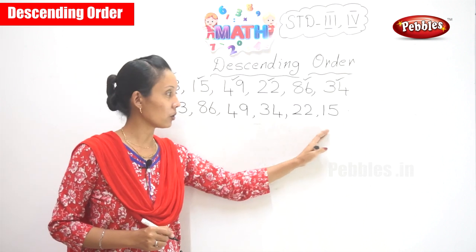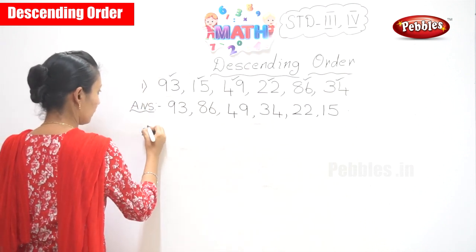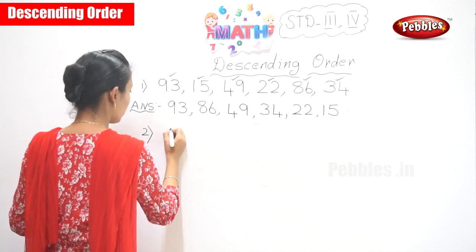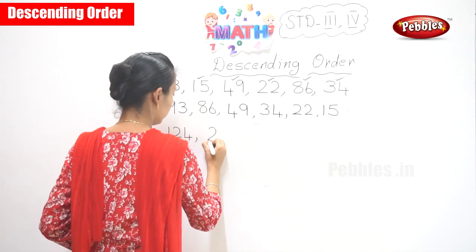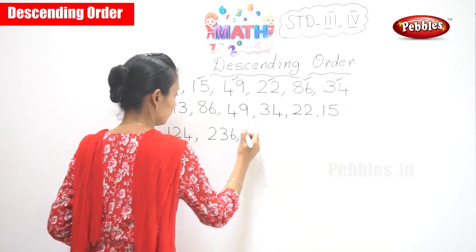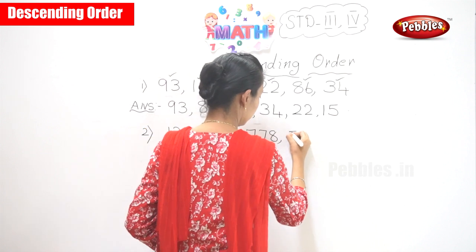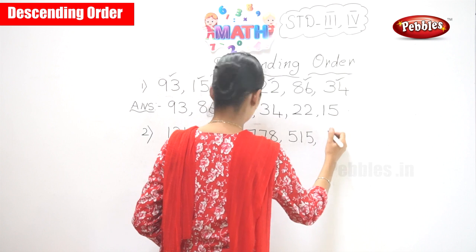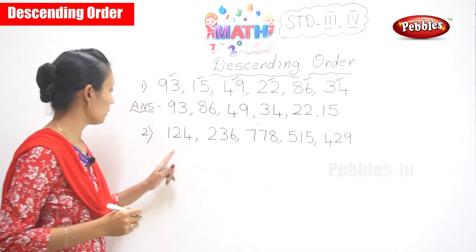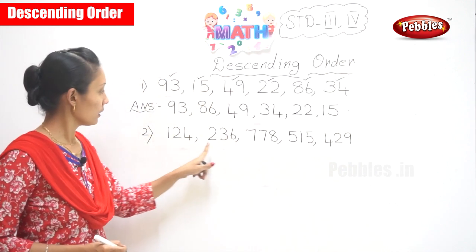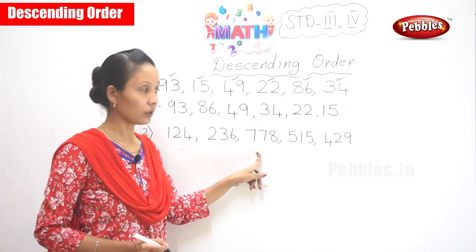So this is called descending order. Can we do one more, children? Yes. Now it is 3-digit numbers. Okay, now you have here: 124, 236, 778, 515.